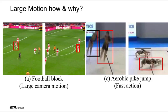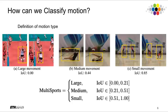For example, a pike jump action on the right occurs in less than one second of time. We define actor motion with intersection over union over time between the boxes of a tube at a fixed time scale. An action having large motion would present a lower intersection over union over time, while a slower action would maintain a higher intersection over union.